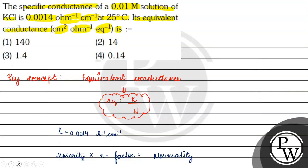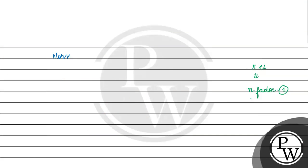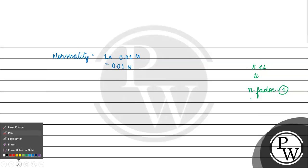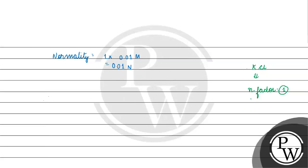So normality equals n-factor (which is 1) multiplied by molarity (which is 0.01 molar), giving normality = 0.01 normal. Now, equivalent conductance equals kappa divided by normality: kappa = 0.0014 ohm inverse centimeter inverse, and normality = 0.01 equivalent per liter.